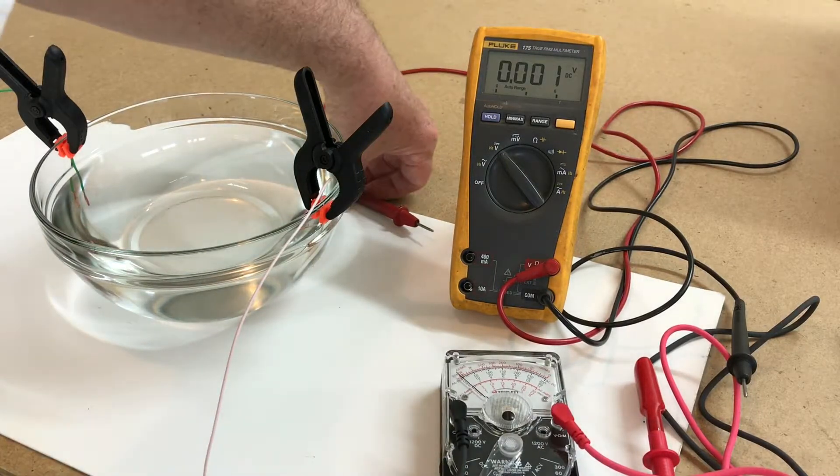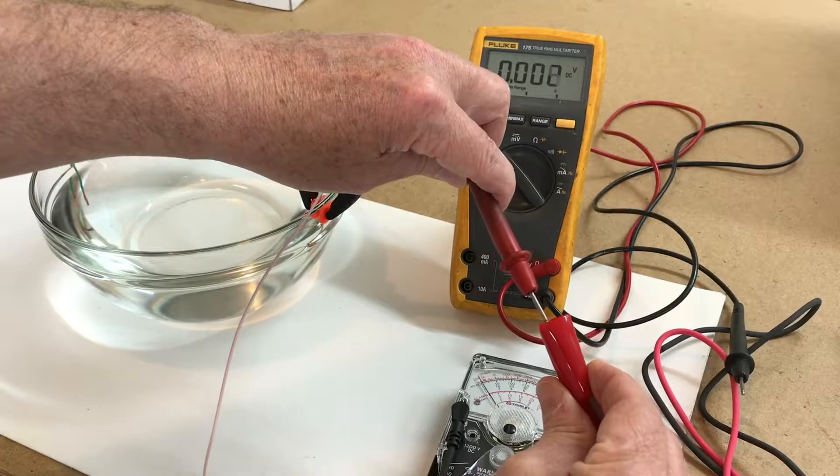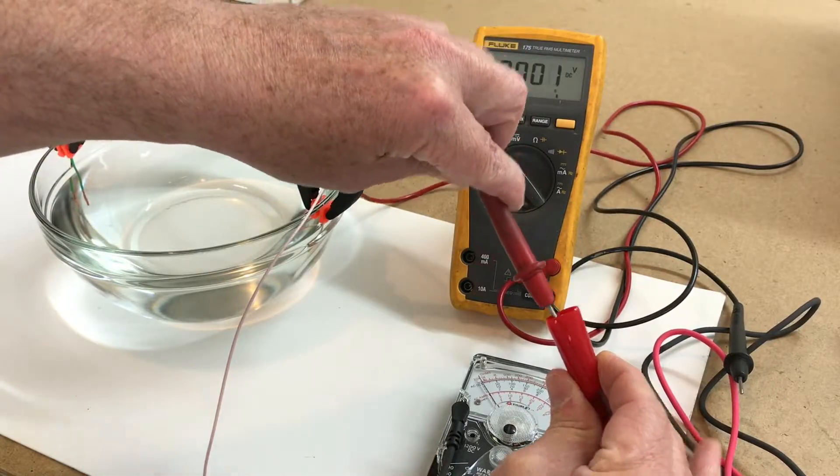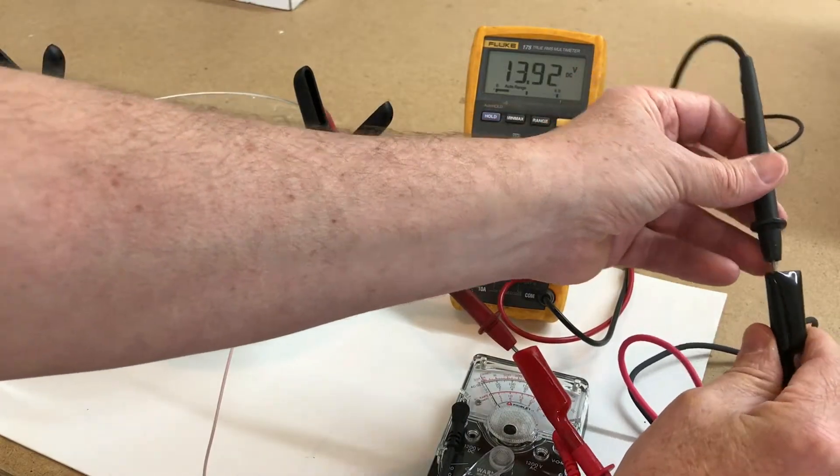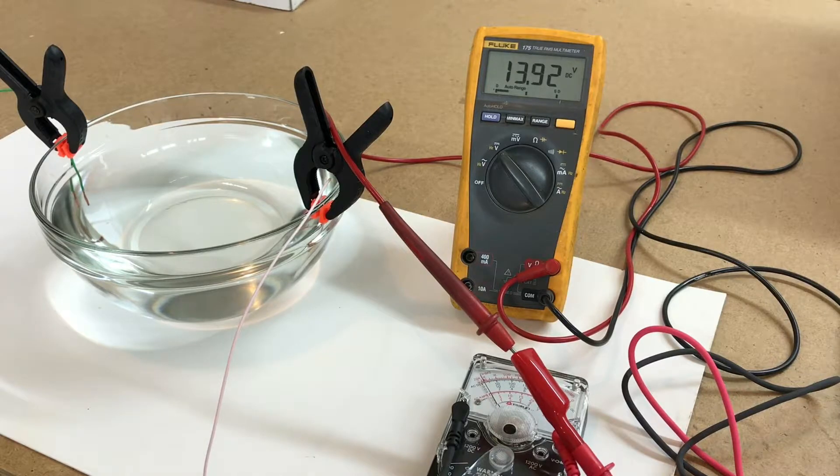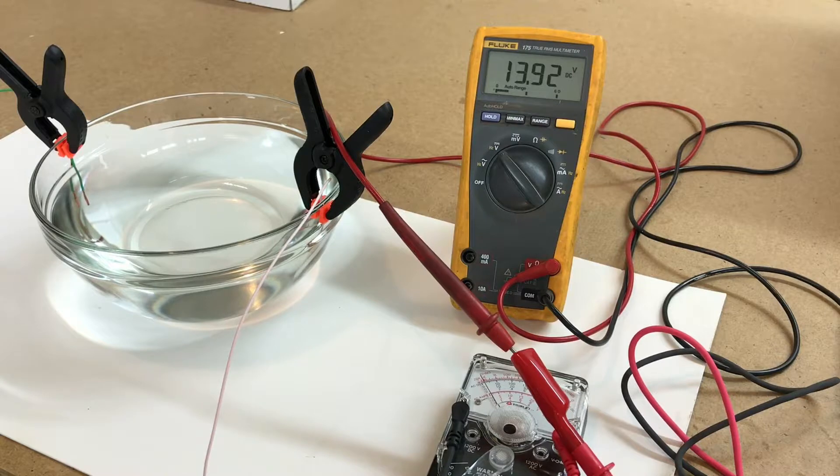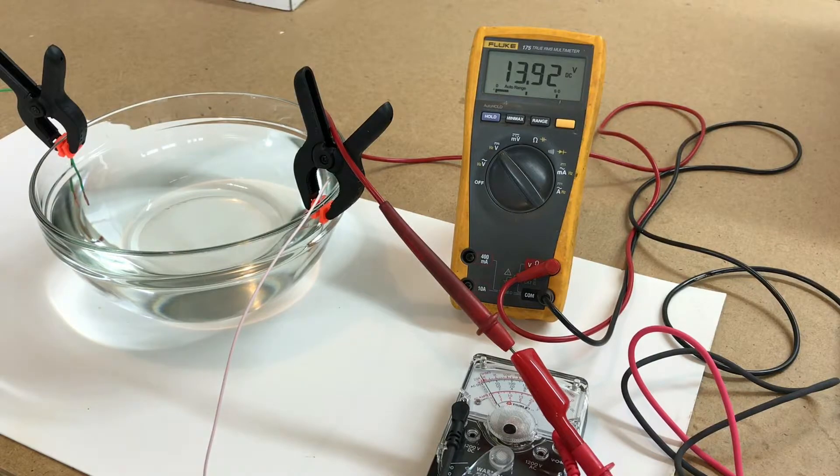I'll show you real quick here. I got the Fluke set up on DC voltage and we'll connect this thing here. As you can see on the meter, the voltage coming out of the Triplet on the continuity setting is 13.9 volts. Compare that to a Fluke or a digital meter that's going to be a lot lower voltage and it won't break down the faults.